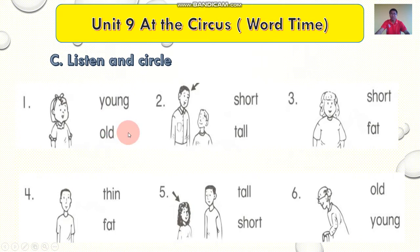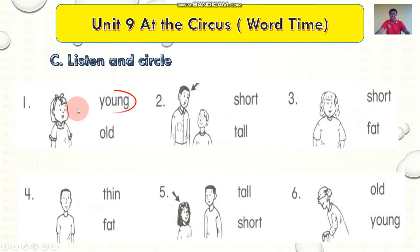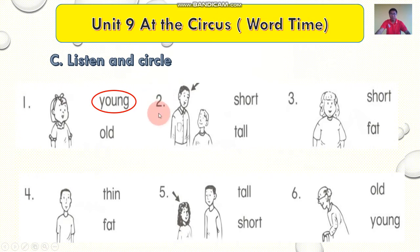Okay. Do you understand? Yeah. Let's start. Number one: young. Young. Okay. Young. Nana, so call the word young. Yes. Do you understand? Yeah, let's go to number two. Number two: tall. Tall.